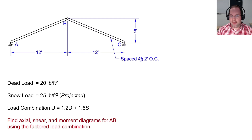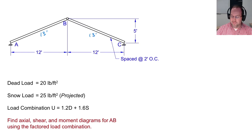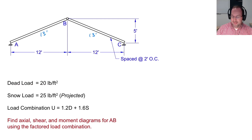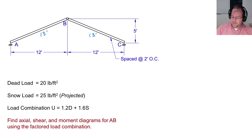The answer is that we use projected loads, illustrated with this roof truss. We have a slope of 5 over 12, so each rafter length is 13 feet. For loading, I have a 20 pounds per square foot dead load — the self-weight of the truss is negligible — and also a 25 pounds per square foot snow load, which I'll consider as a projected load.